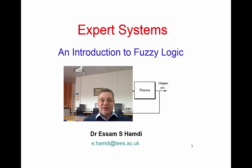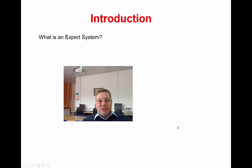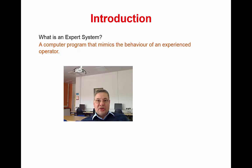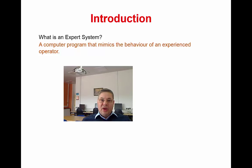The best way to introduce the concept is to start with expert systems. An expert system in the context of control is a computer program that mimics the operator. For example, if you're driving a car and you want to keep the distance between your car and the car in front at a certain value, and the car in front slows down, you need to apply the brake. You don't need to model the engine, drive train, or inertia of the car — you know from experience: if the car in front becomes closer, you apply the brake.